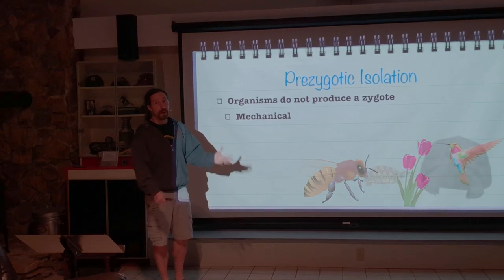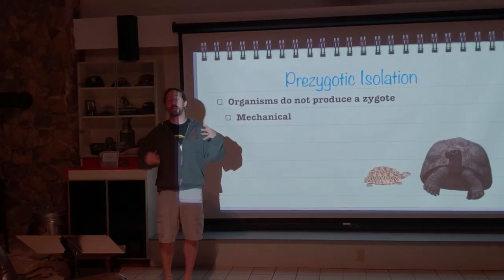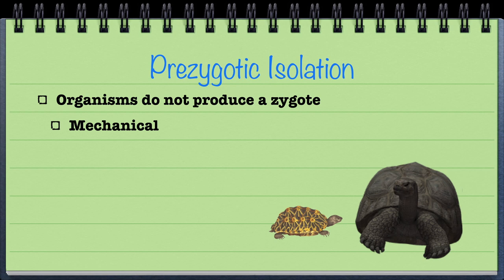We could also look at the Galapagos tortoise and the Ecuadorian tortoise. These two tortoises, even though genetically they're extremely similar, based upon size their reproductive organs are completely incompatible with each other. That means that the Galapagos tortoise is completely mechanically reproductively isolated from the Ecuadorian tortoise.